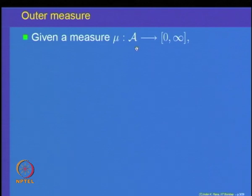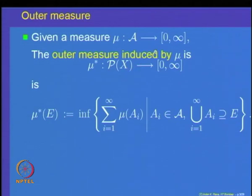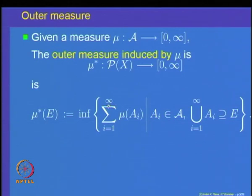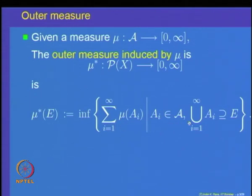Given a measure mu on an algebra A of subsets of a set X, the outer measure induced by this measure is a set function defined on the class of all subsets of the set X, taking non-negative values. For a set E subset of X, look at a countable covering of E by elements of the algebra A, and look at the sum of mu of A_i. The outer measure mu* of E is the infimum over all such coverings: mu*(E) = inf { sum mu(A_i) : union of A_i covers E }.